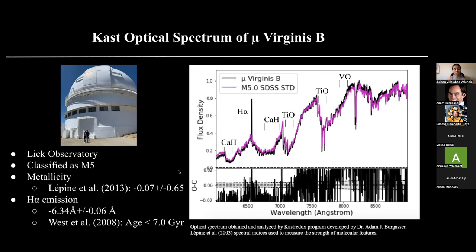Something else I want to touch on is the metallicity of Mu Virginis B, which is the measure of abundance of iron to hydrogen of this star compared to the sun. From the Lepine 2003 paper we get a value which basically indicates that Mu Virginis B is about eight-tenths as abundant in metals as our sun, so it could be less abundant than our sun — or maybe a little bit more — based upon this number.